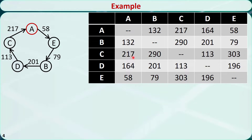Now we found a tour: A, E, B, D, C, A, and the total distance is 668.